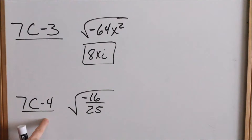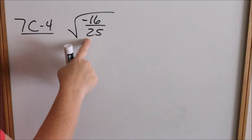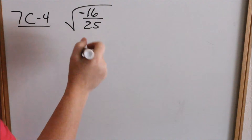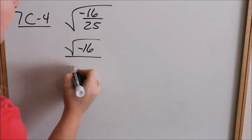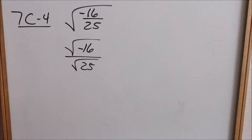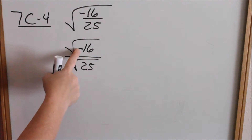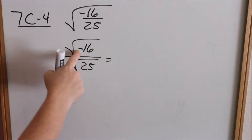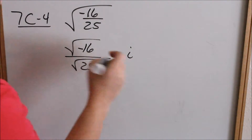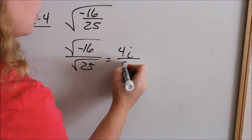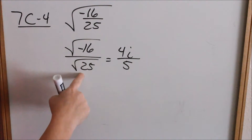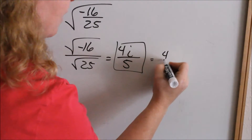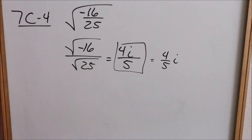Look at 7c4: the square root of negative 16 over 25. When you have the square root of a fraction, you take the square root of the numerator and the square root of the denominator. So rewrite this as square root of negative 16 over square root of 25. The numerator will be an imaginary number but the denominator will not. Take out the negative as an i, square root of 16 is 4, and square root of 25 is positive 5. So this is 4i over 5, which can also be written as four-fifths i — either way it's the same thing.